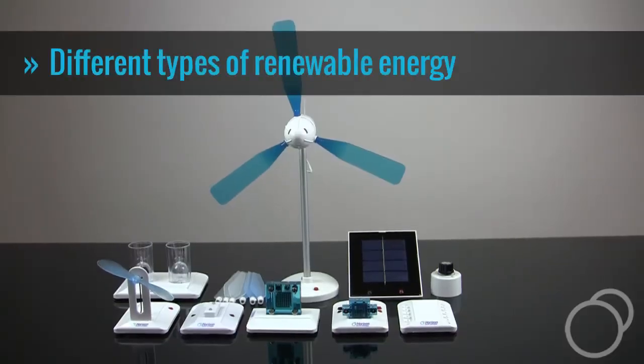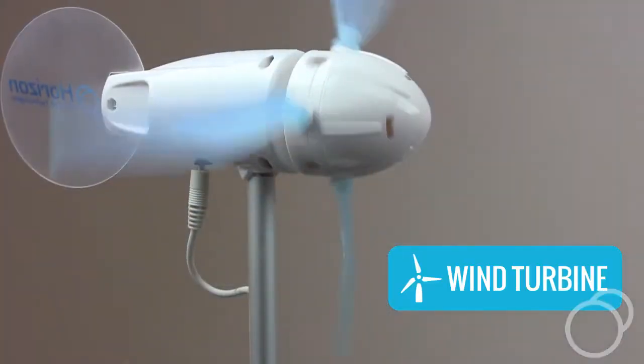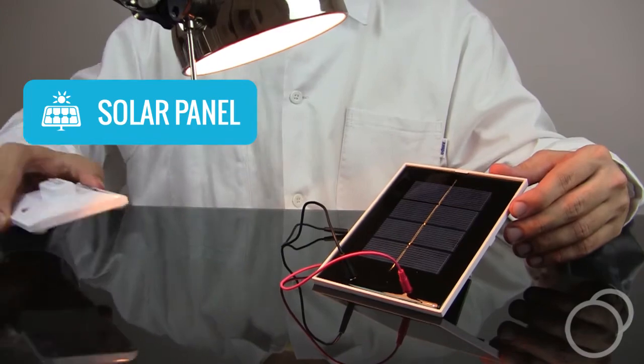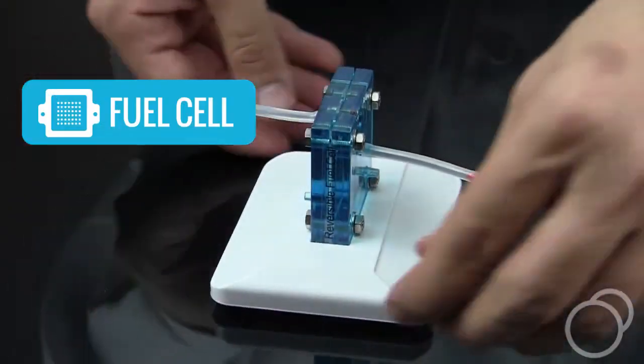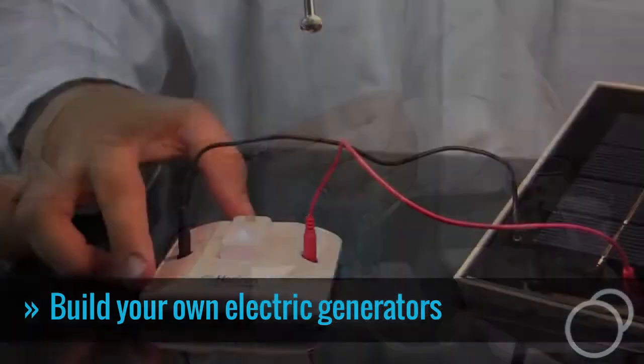The Renewable Energy Education Kit can generate electricity using a wind turbine, solar panel, or one of two hydrogen fuel cells. The electric current can be used to power a small fan or light up LEDs.